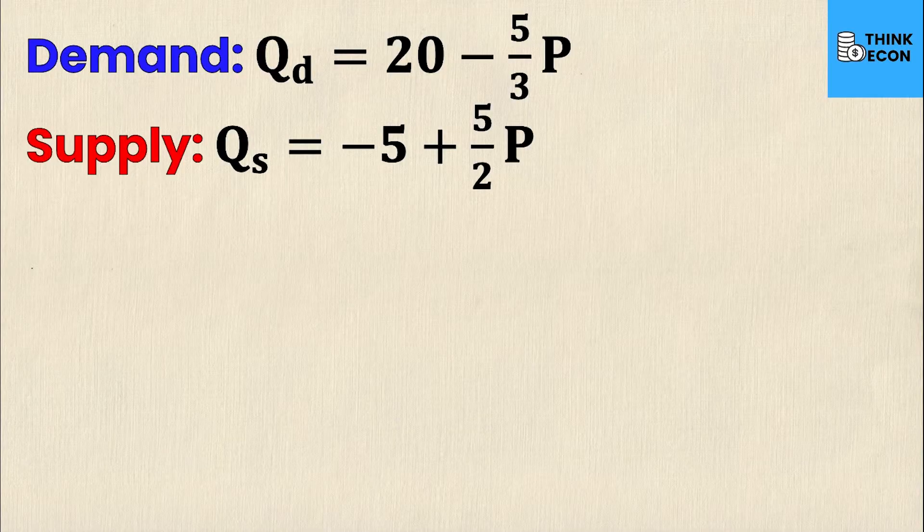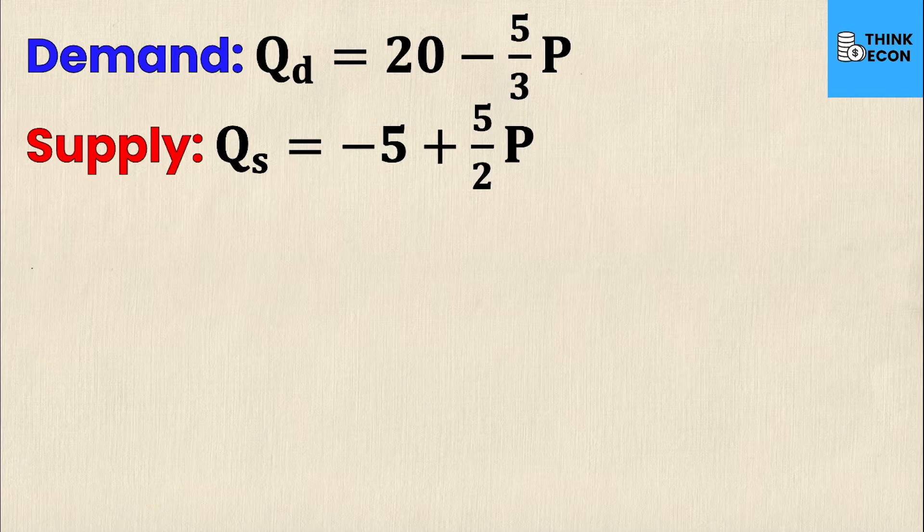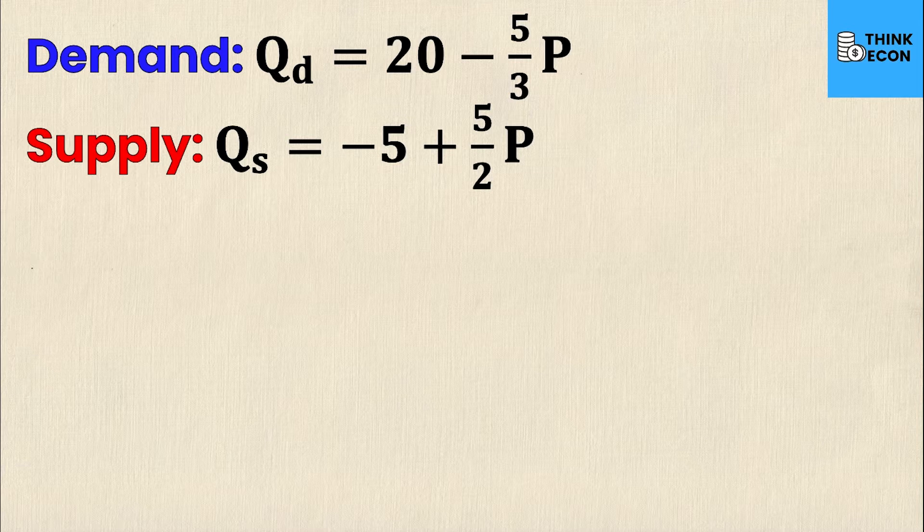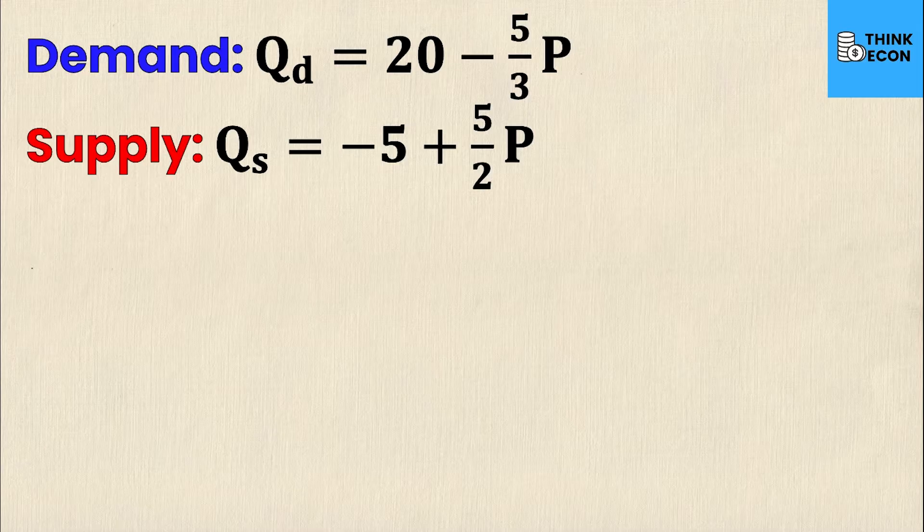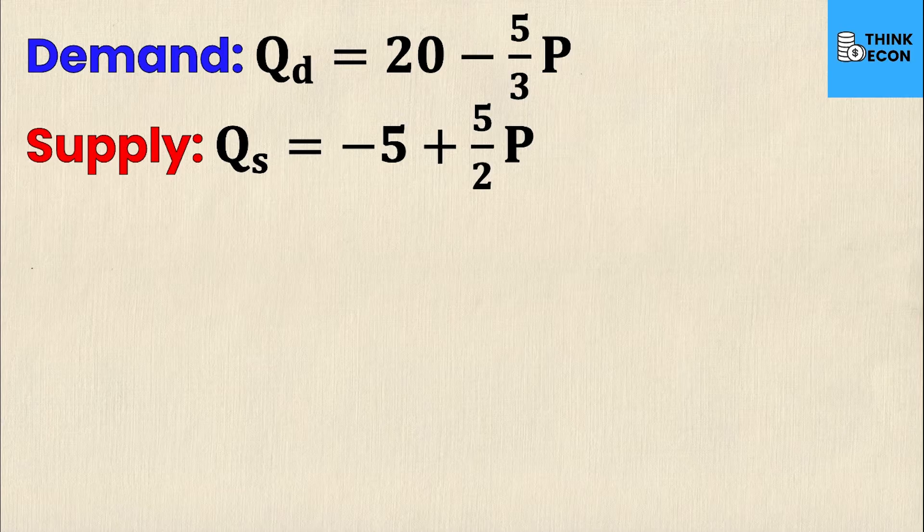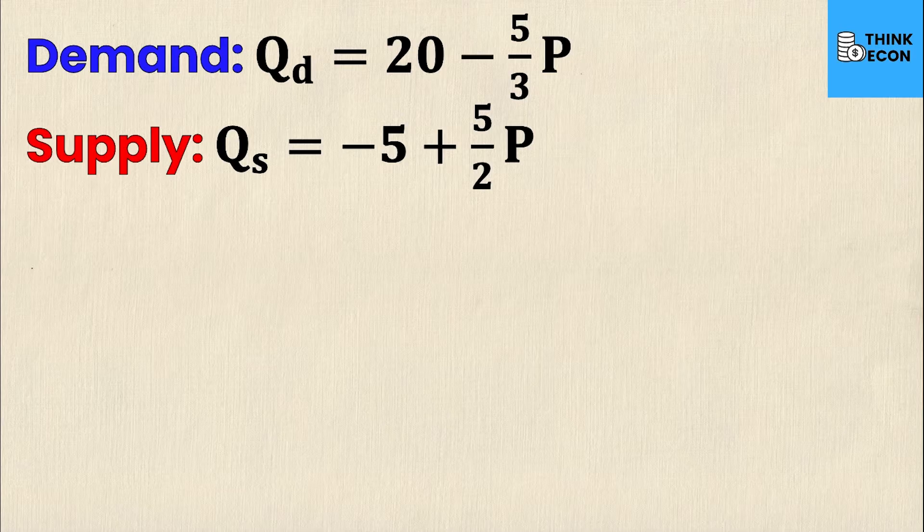Sometimes you'll have demand and supply equations which have fractions instead of nice round integers to use. In this case it can make the algebra more tricky. This video is dedicated specifically to learning how to calculate market equilibrium algebraically using supply and demand equations which involve fractions because it's quite common for you to receive questions like this on a test or homework assignment. In front of us we have a demand equation QD equals 20 minus 5 over 3P. The supply equation is QS equals negative 5 plus 5 over 2P.